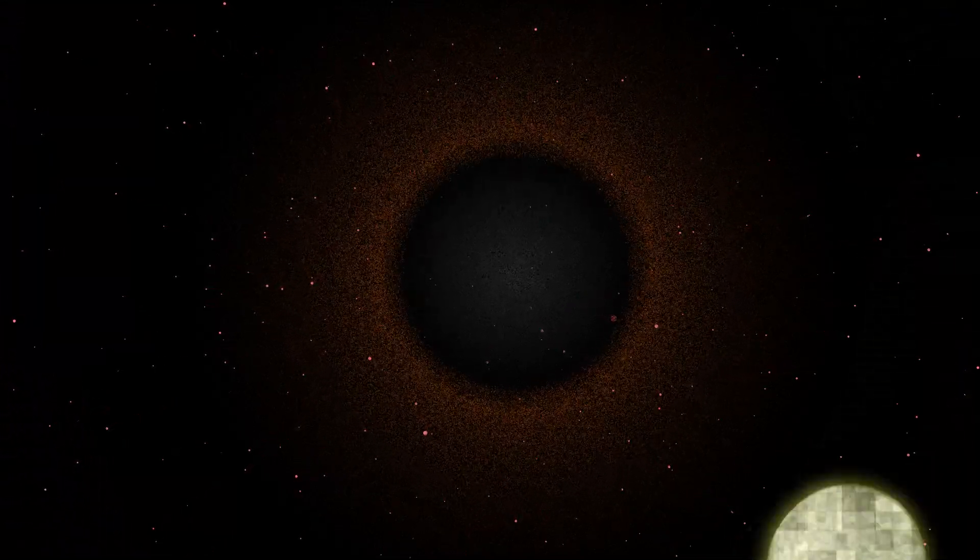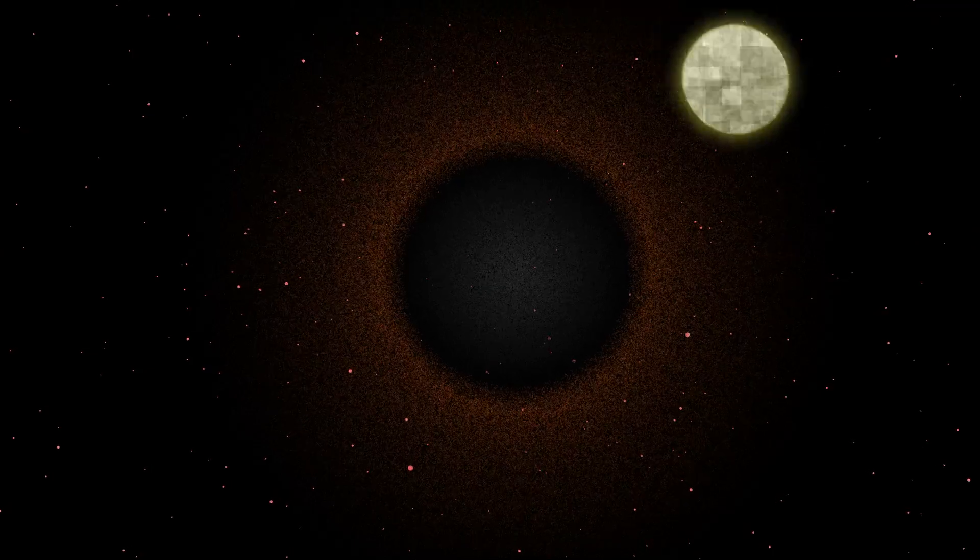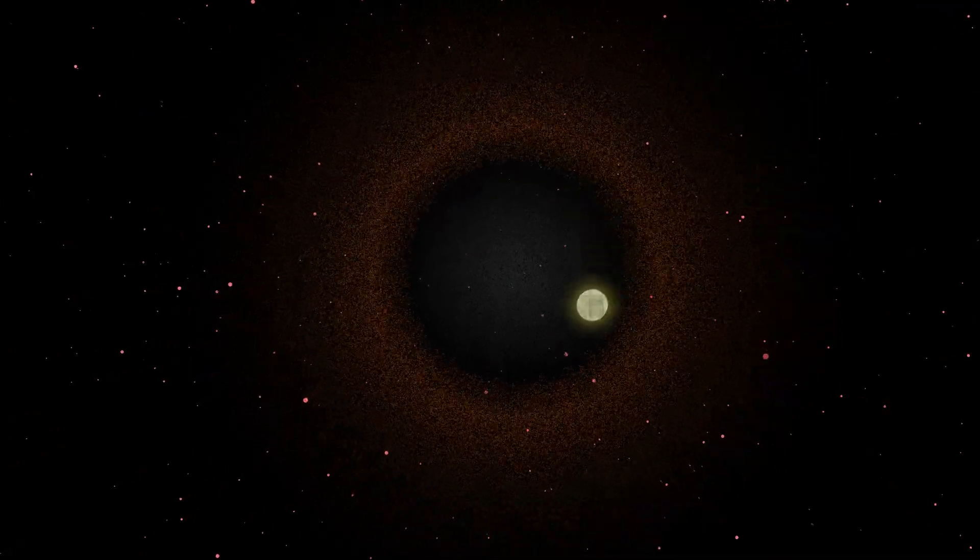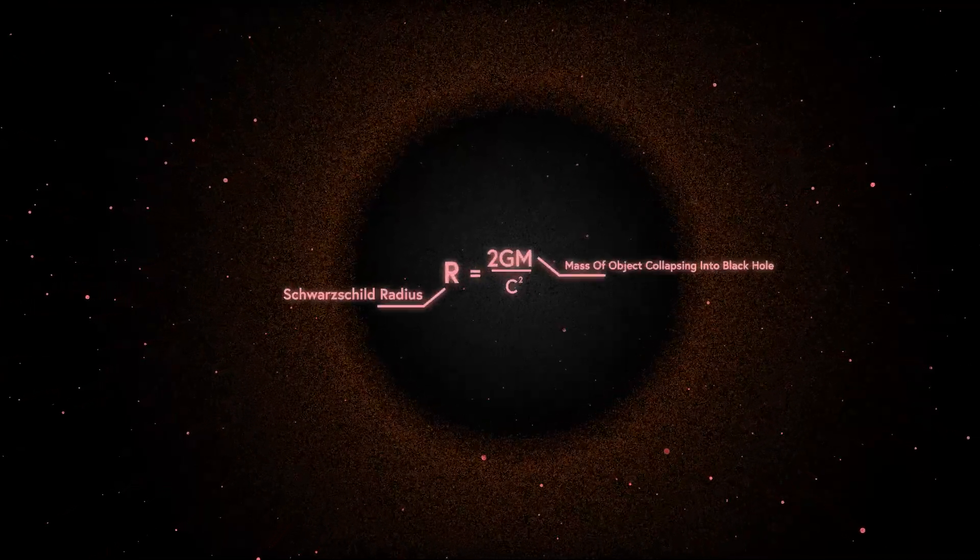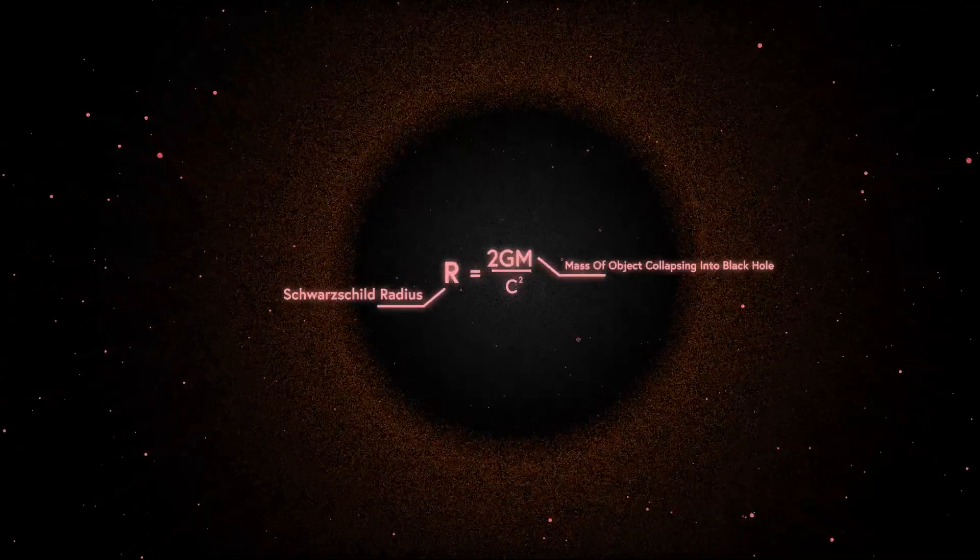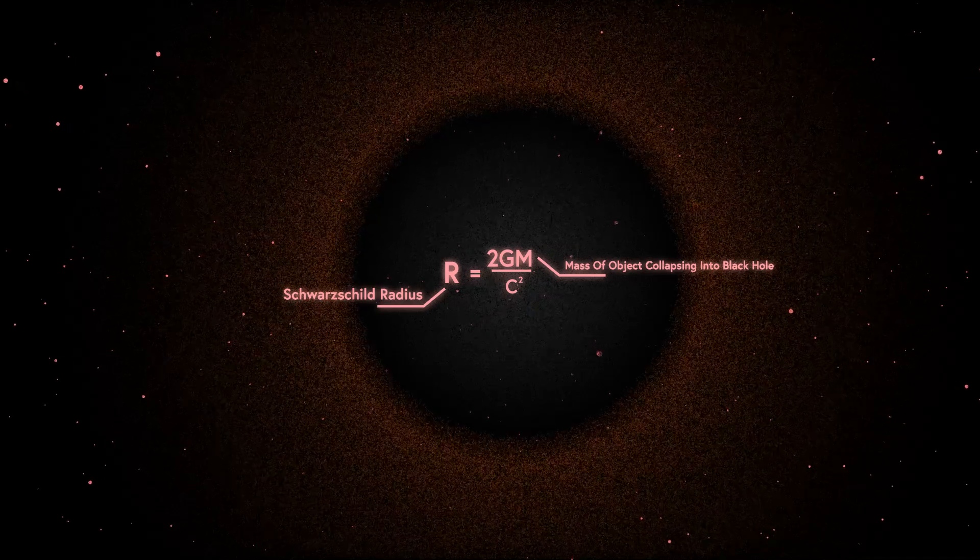A stronger G might make black holes more common, pulling matter in more aggressively. However, black hole formation depends on the Schwarzschild radius, which is the radius of the area around a black hole which nothing, not even light, can escape from. If G increases, a smaller mass could collapse into a black hole much more easily, making them more frequent.